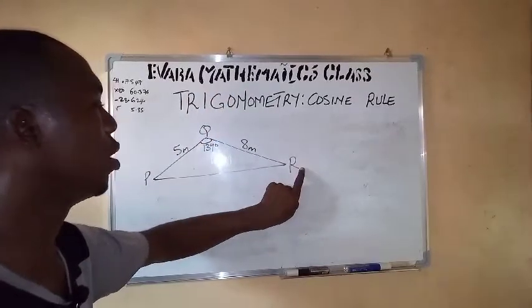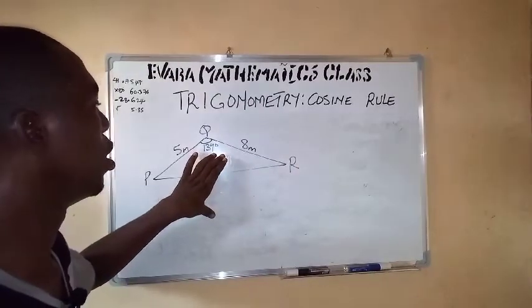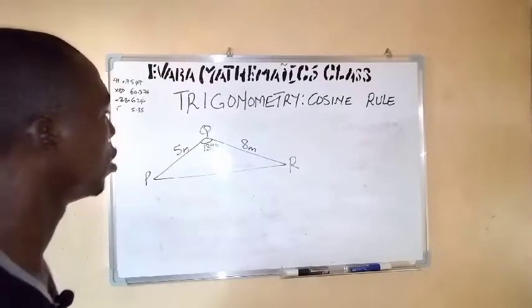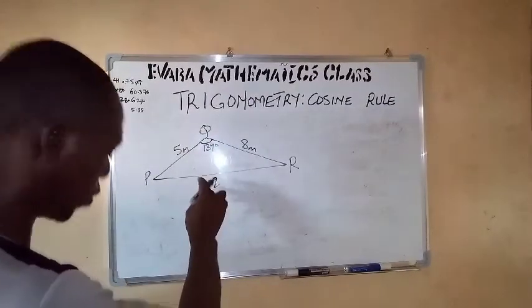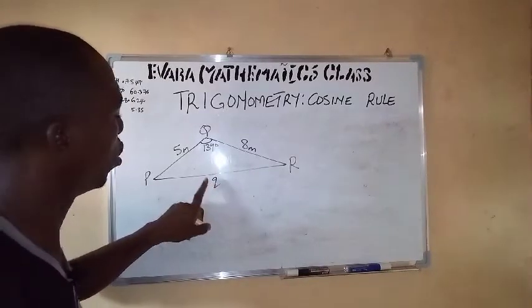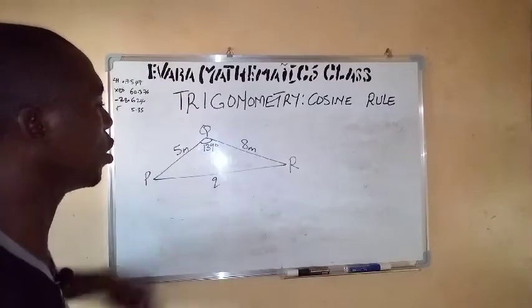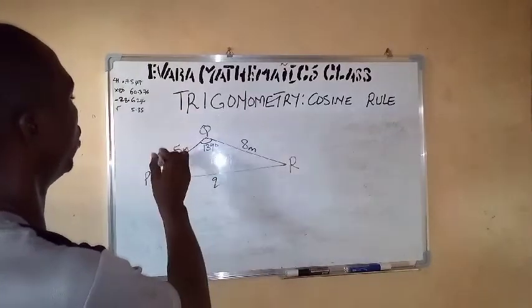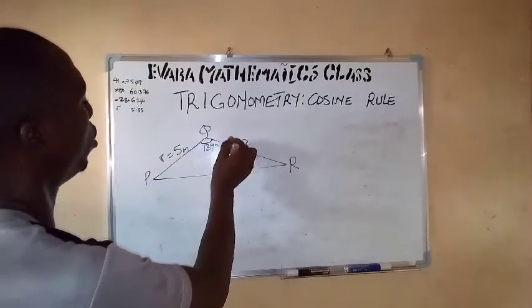find this side. This is going to be our small q because this is the angle Q. So this has small q. This one is going to be the small r, and here is going to be a small p. So for us to get this side q, can we use cosine rule for this?